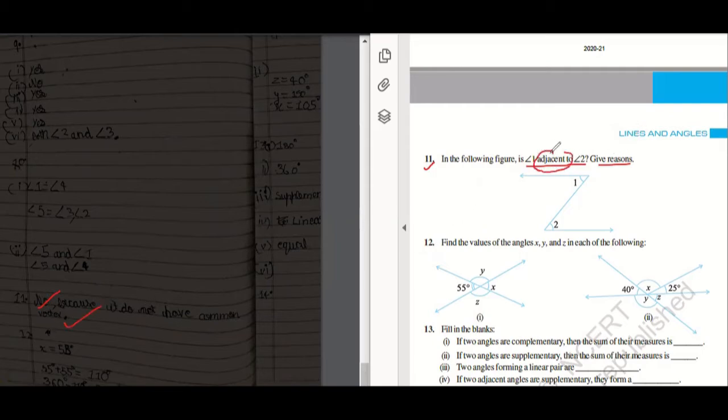We have already learned about adjacent angles, and there are three properties that we have already discussed. The explanation is also correct, so common vertex is an important thing which is not there.